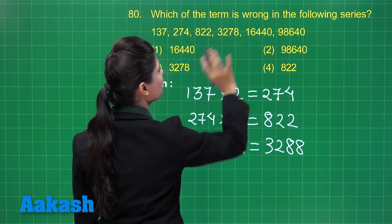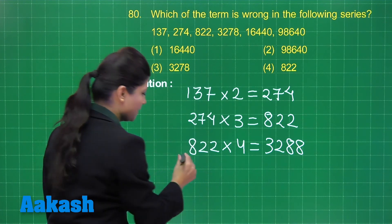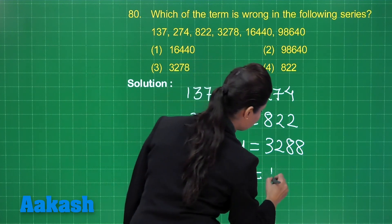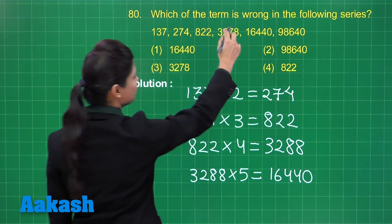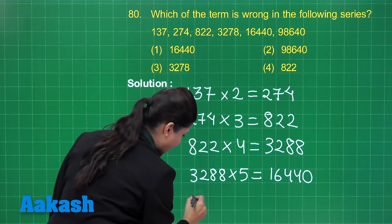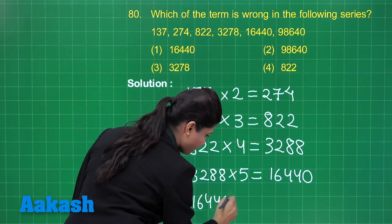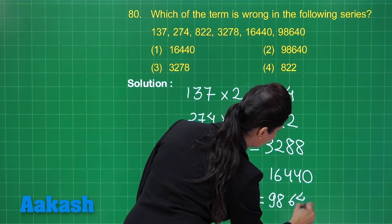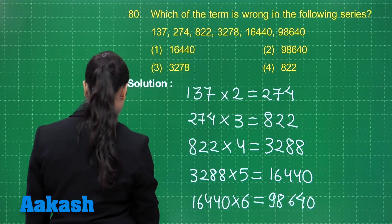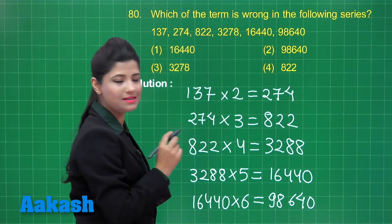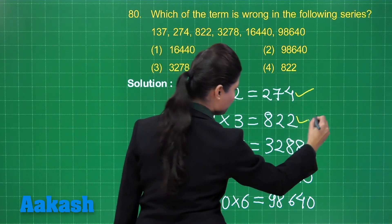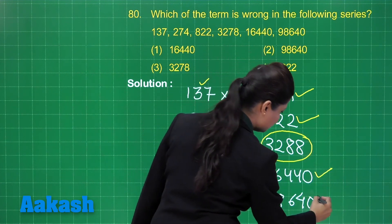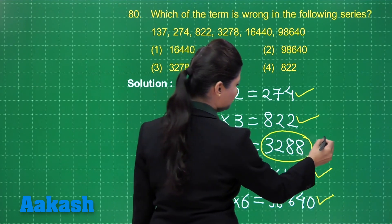Let us see whether the same pattern is followed by the rest of the numbers. If we consider 3,288 and multiply it by 5, the product is 16,440, which is clearly the following number. And if I consider 16,440 and multiply it by 6, it clearly results in 98,640. So the incorrect term is confirmed.